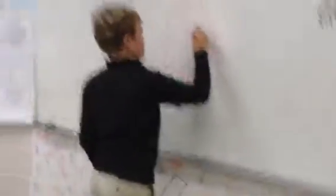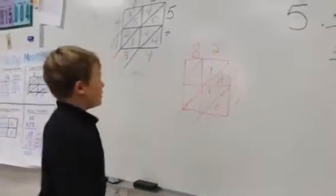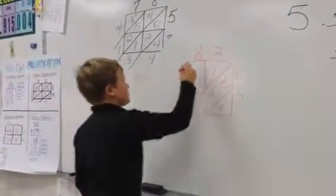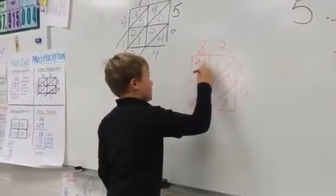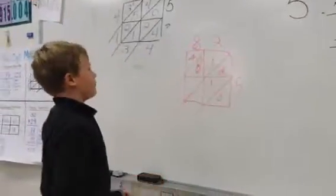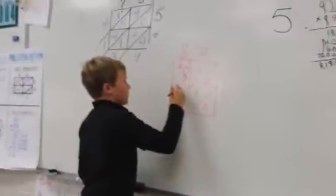6 times 2 equals 12. And 5 times 2 equals 10. And then you do 8 times 6, which equals 48. And then you do 5 times 8, which equals 40.